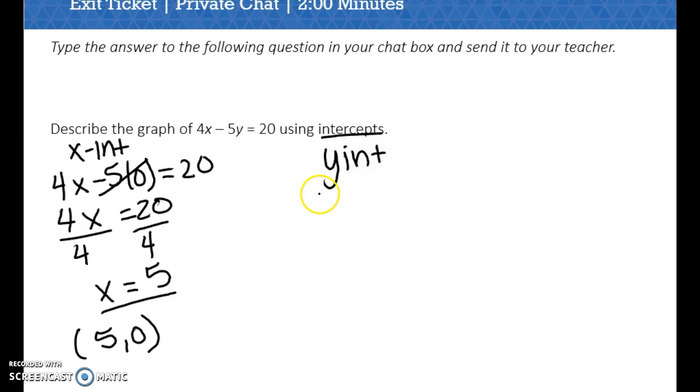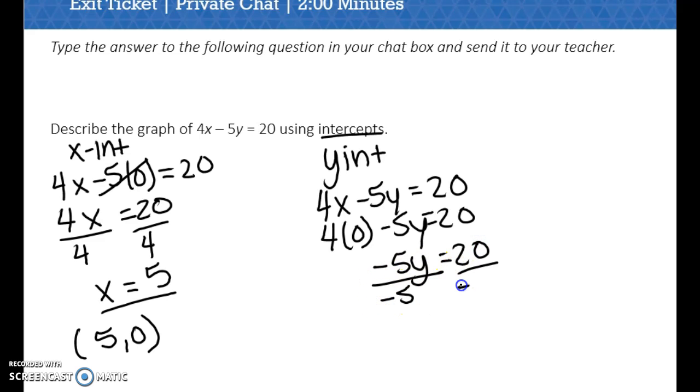We can then find the y-intercept by plugging 0 in for x. So 4 times 0 is 0. So negative 5y equals 20. And we can divide both sides by negative 5. So y is equal to negative 4. And again, when x is 0, y is negative 4.